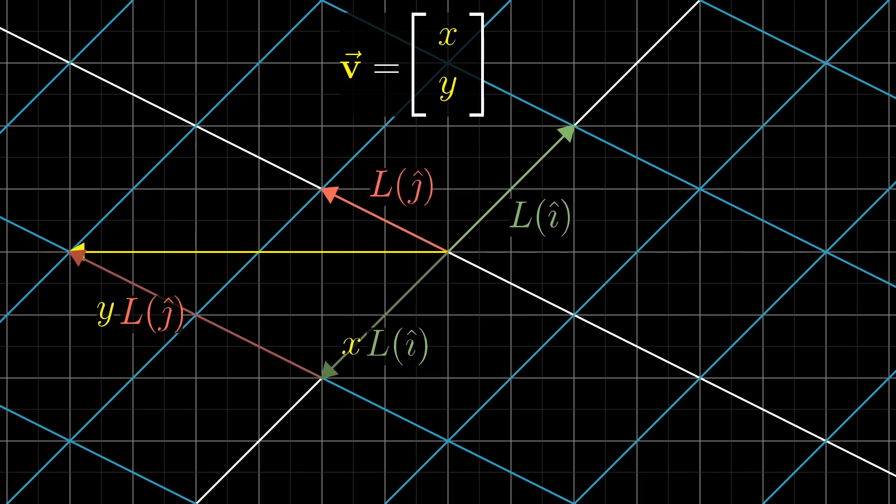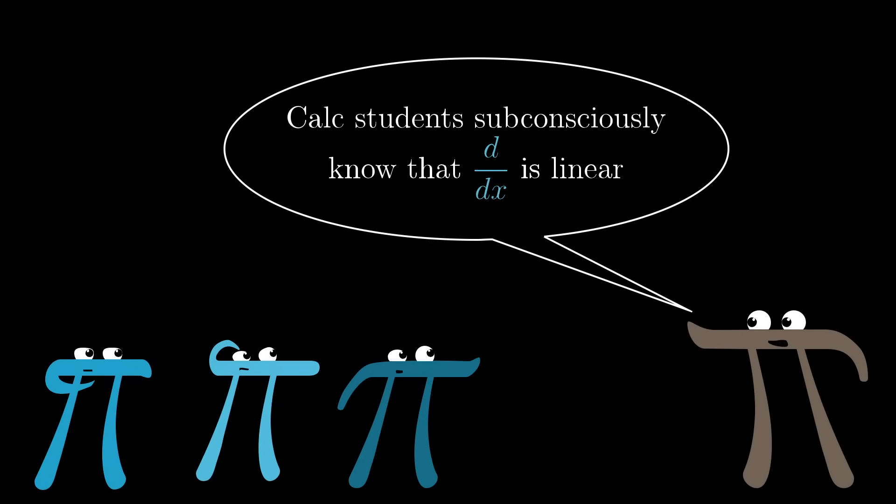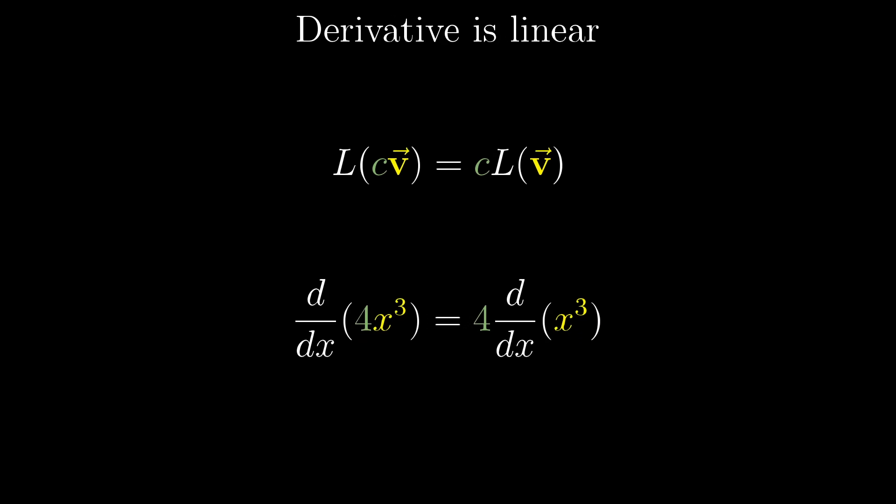One of the most important consequences of these properties, which makes matrix vector multiplication possible, is that a linear transformation is completely described by where it takes the basis vectors. Since any vector can be expressed by scaling and adding the basis vectors in some way, finding the transformed version of a vector comes down to scaling and adding the transformed versions of the basis vectors in that same way. As you'll see in just a moment, this is as true for functions as it is for arrows. For example, calculus students are always using the fact that the derivative is additive and has the scaling property, even if they haven't heard it phrased that way. If you add two functions, then take the derivative, it's the same as first taking the derivative of each one separately, then adding the result. Similarly, if you scale a function, then take the derivative, it's the same as first taking the derivative, then scaling the result.